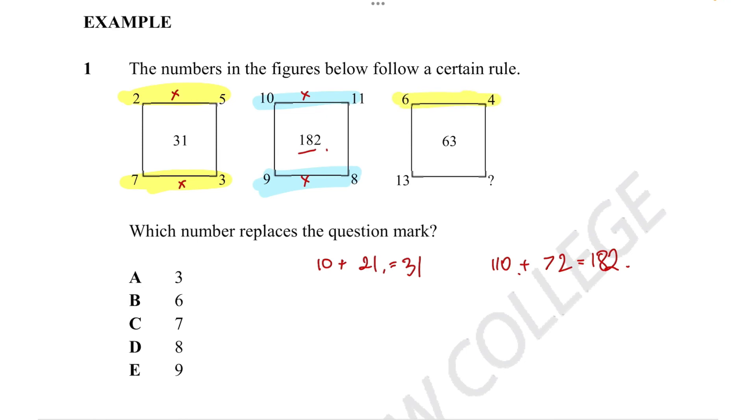So applying it one more time we get 6 times 4 is equal to 24 plus 13 times the question mark, which let's just say it's x, has to equal 63. Now we can figure out what the question mark is by just rearranging this equation. 13x is equal to 63 minus 24. So 63 minus 24 is equal to 39. And so we can figure out that x is equal to 3. So the correct answer option is option A.